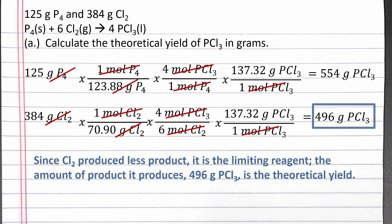Since Cl2 produced less product, chlorine gas is the limiting reagent. The amount of product it produces, 496 grams PCl3, is the theoretical yield.